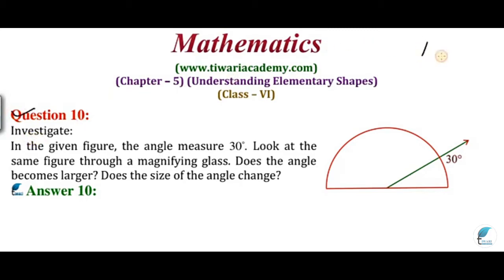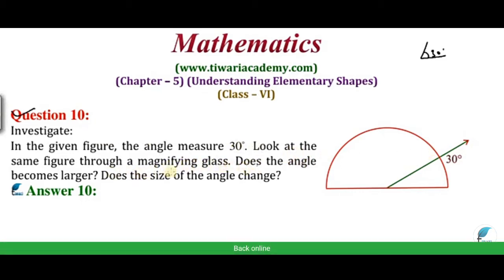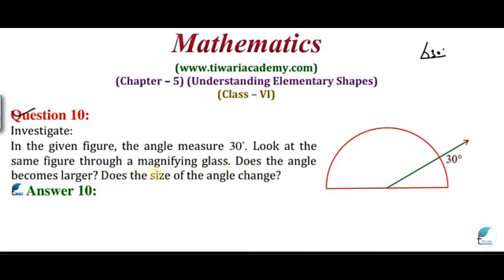We are told that this angle is 30 degrees. If you measure it perfectly, the angle will not change. Just take a bigger protractor — like a big magnifying glass. Look, there will be no difference. You have to measure this 30 degrees. Does the size of the angle change? No — the measure of the angle will be the same.